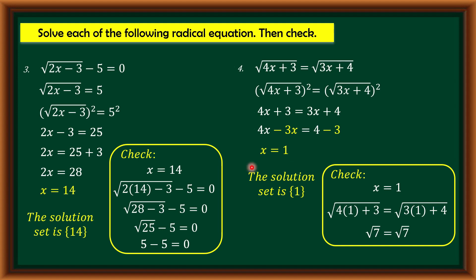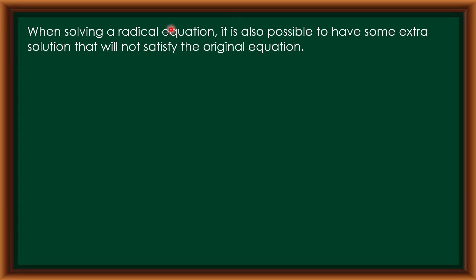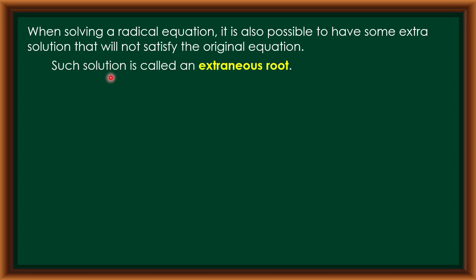That is how we solve a radical equation. However, the property of equality is not always true for some cases. When solving a radical equation, it is also possible to have extra solutions that do not satisfy the original equation. Such a solution is called an extraneous root. Therefore, it is a must to check the answer in the original equation.